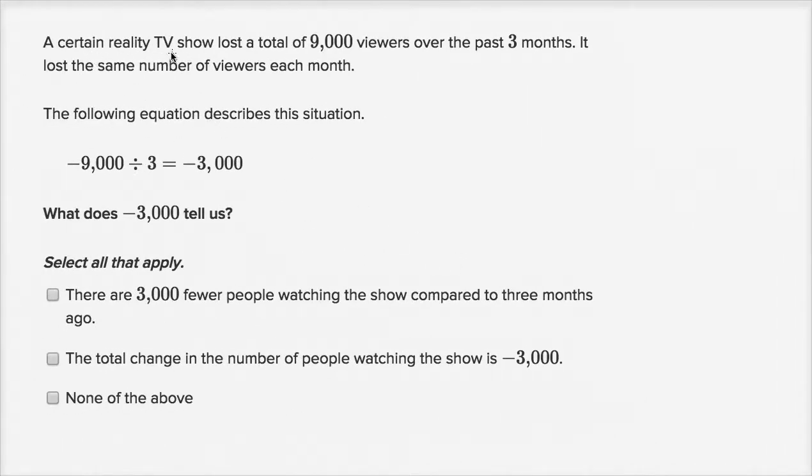A certain reality TV show lost, so we're losing, so a negative might be a nice way to represent the loss, lost a total of 9,000 viewers over the past three months. It lost the same number of viewers each month. The following equation describes the situation. So it lost a total of 9,000 viewers and it did it over three months.